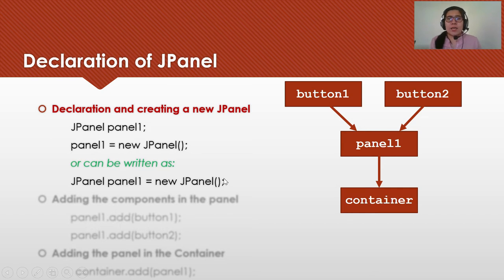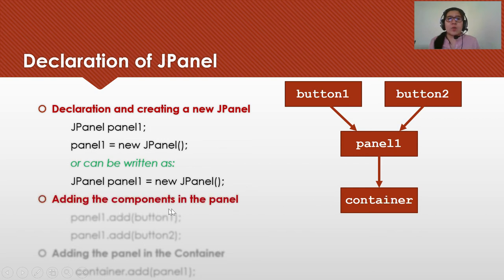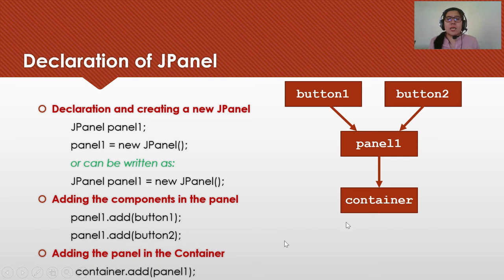When do we use a panel? When we have many components — it makes our components organized. In our example, button1 and button2 will be added to panel1, and then panel1 will be added to the container. To add components to a panel: panel1.add(button1), panel1.add(button2). Then, since button1 and button2 are added to panel1, we then add the panel to the container: container.add(panel1).